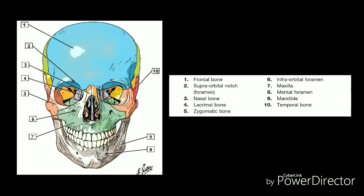The two zygomatic bones form the cheeks and contribute to the orbits. They articulate with the frontal, temporal, maxilla, and sphenoid bones. The two lacrimal bones form the medial wall of the orbit and articulate with the frontal, ethmoid, maxilla, and inferior nasal conchae. The lacrimal bones are the two smallest bones located in the face.